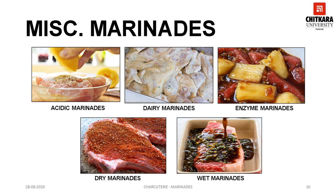The fourth one is dry marinades, also called dry rubs or barbecue spice rubs. Dry marinades use dry herbs and a variety of spices. The main ingredient in a dry marinade is salt. The salt in a dry rub works to break down the proteins of the meat so that other flavors can be absorbed. To dry rub a piece of meat, it's important to first coat it with lard, oil or water so that the rub can be pressed into the surface.